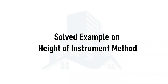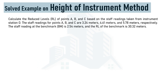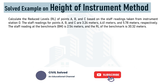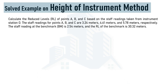Welcome everyone to another video in the leveling series, where we are going to solve an example related to the height of instrument method of leveling. In this example, we are asked to determine the reduced levels of three points A, B, and C. The staff readings at these points are taken from station point O, and the staff reading at the benchmark along with its reduced level are also given.